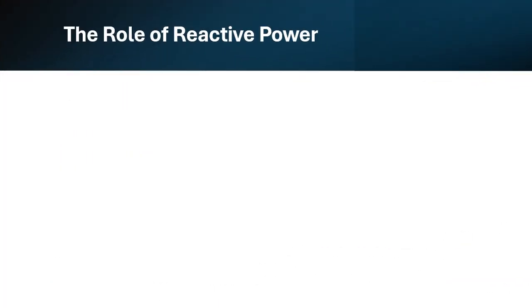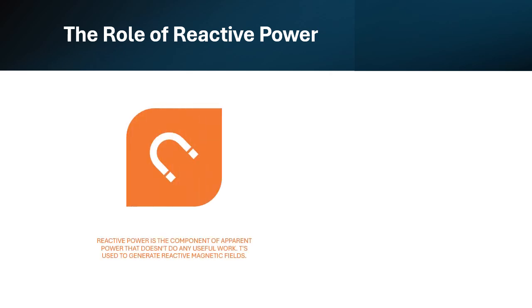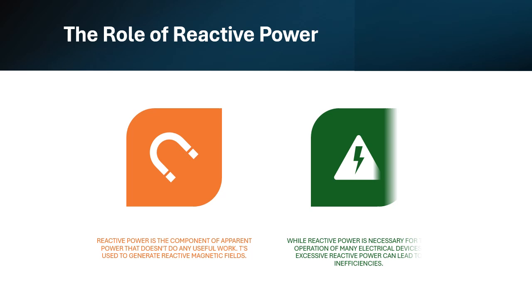The Role of Reactive Power: Reactive power is the component of apparent power that doesn't do any useful work. It is used to generate reactive magnetic fields. While reactive power is necessary for the operation of many electrical devices, excessive reactive power can lead to inefficiencies.